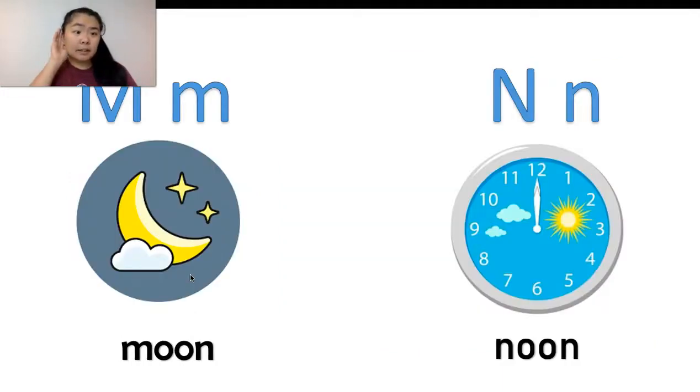Listen to the difference. M says M like moon. M, moon. N says N like noon. N, noon.